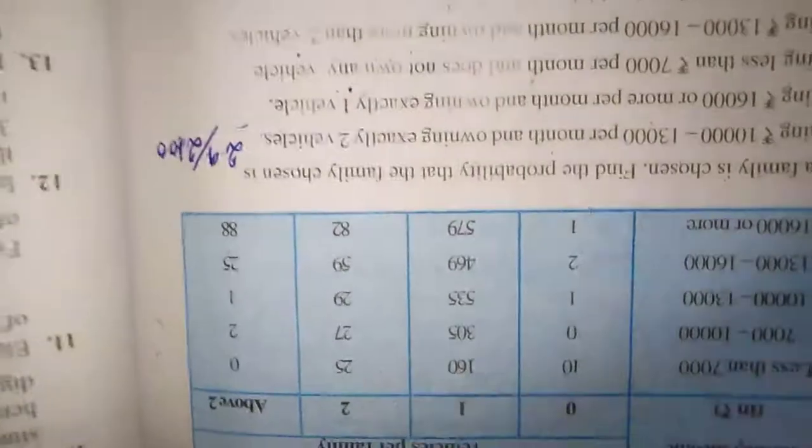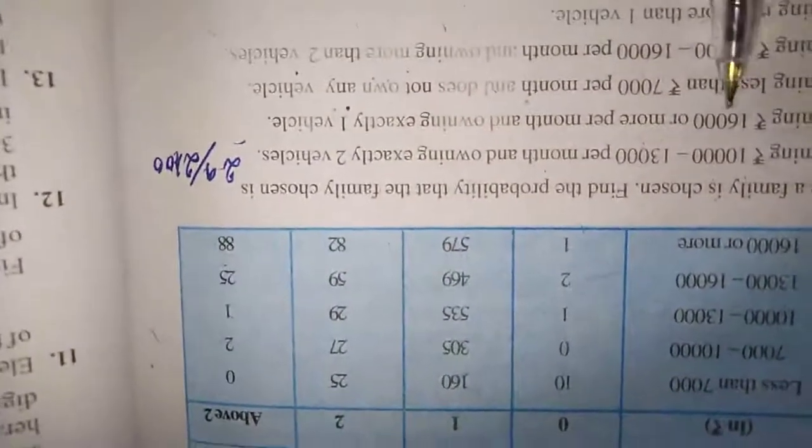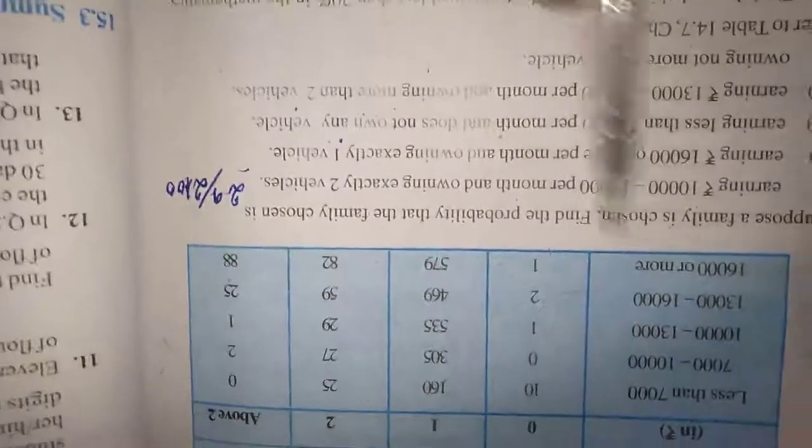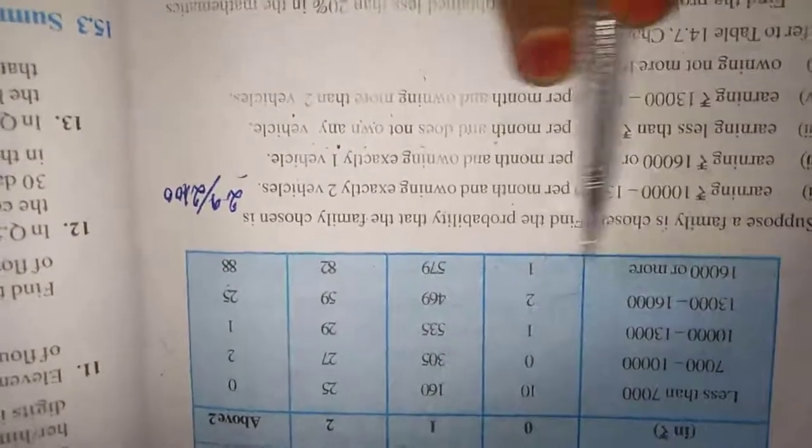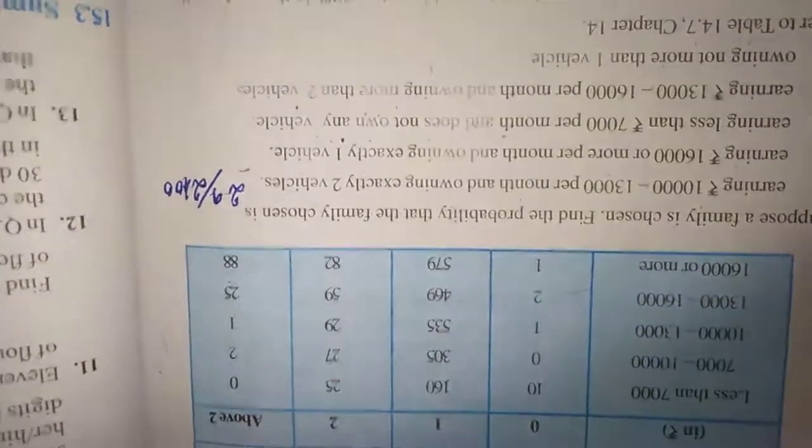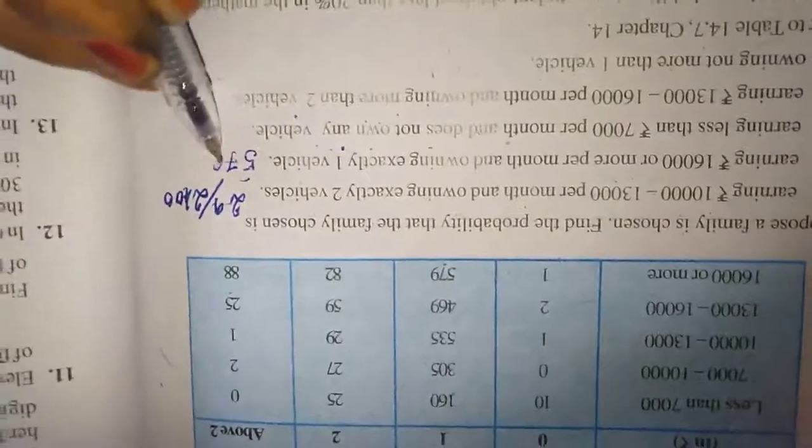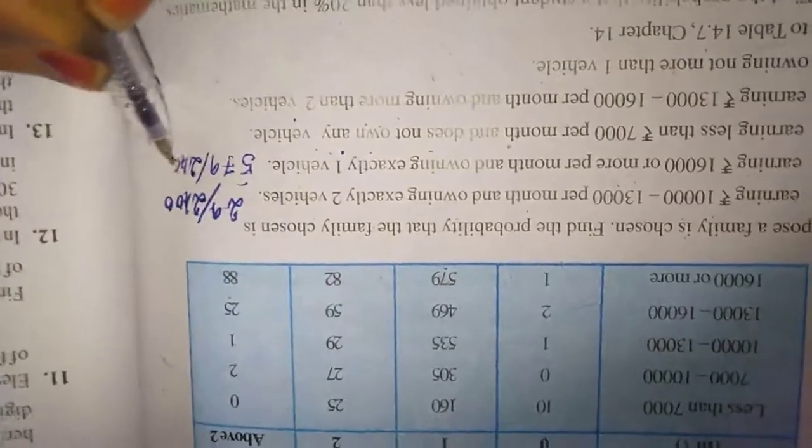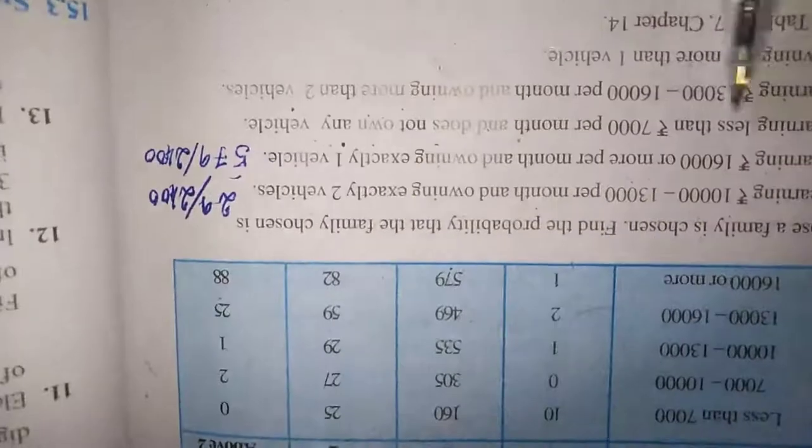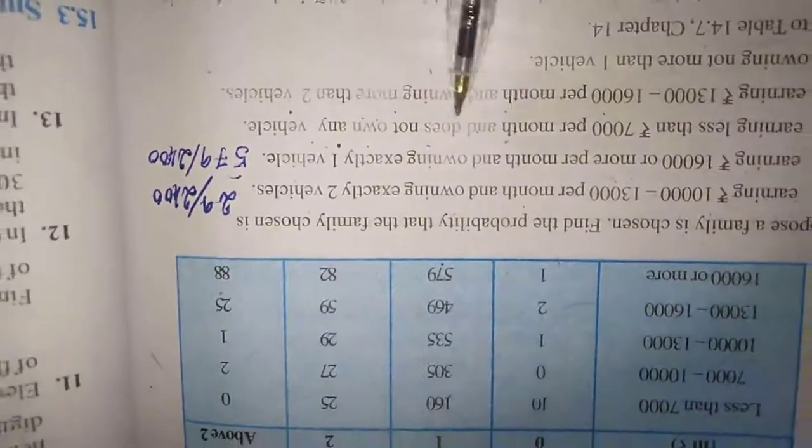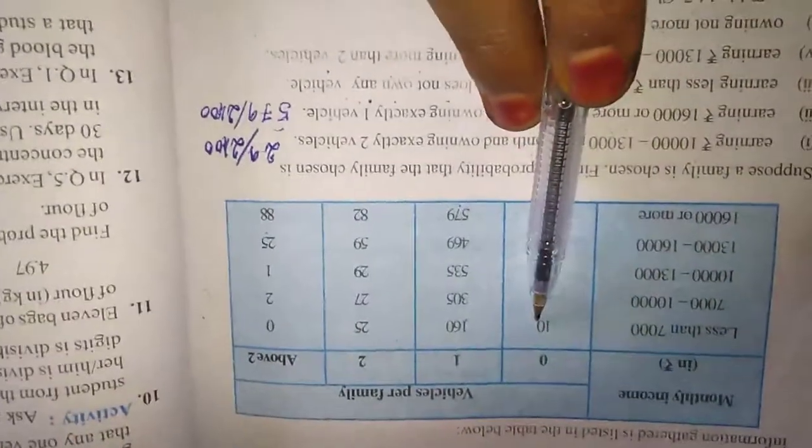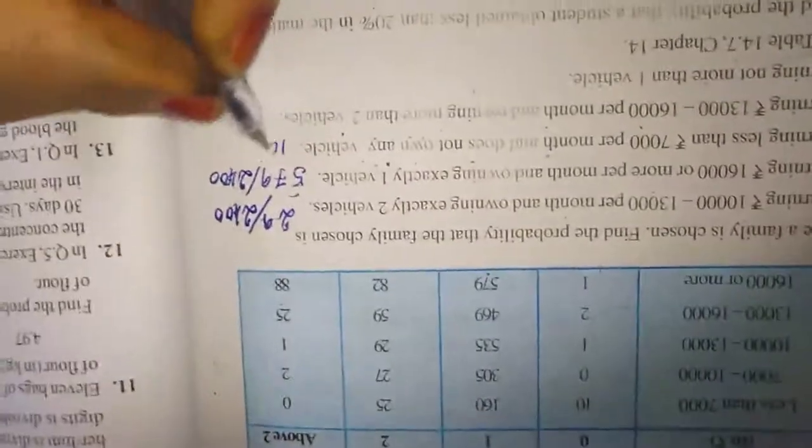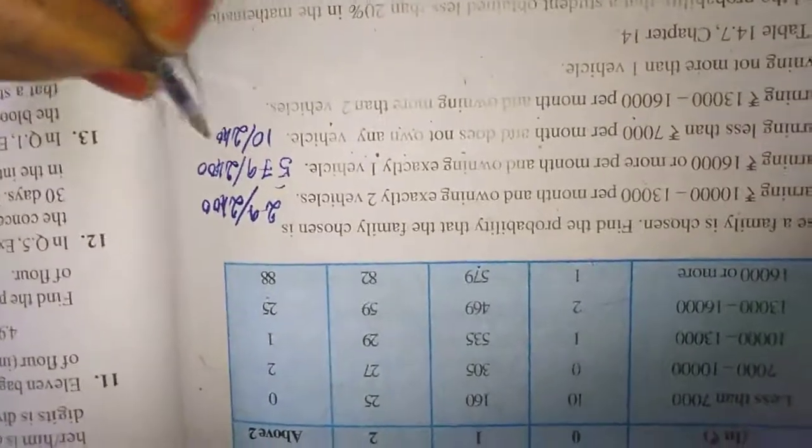Here earning 16,000 or more per month and owning exactly one vehicle. One vehicle means see here in this line, 579. So 579 divided by 2,400. Next one is earning less than 7,000 per month and does not owning any vehicle. That means zero vehicle. Less than 7,000, zero vehicle is 10. So 10 by 2,400.